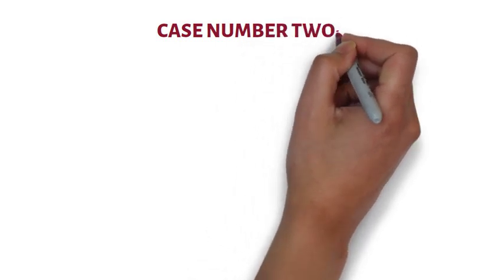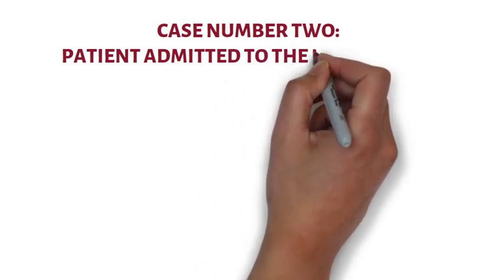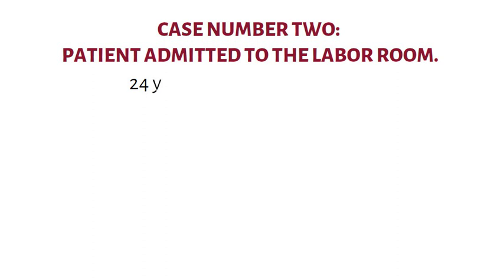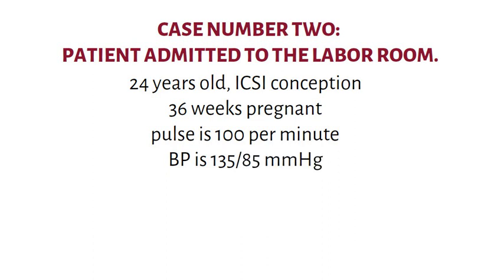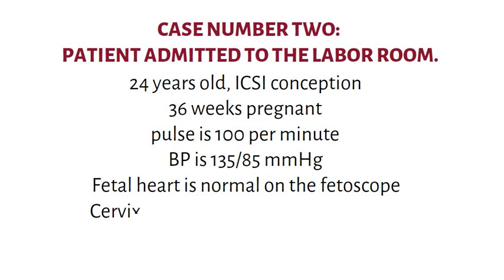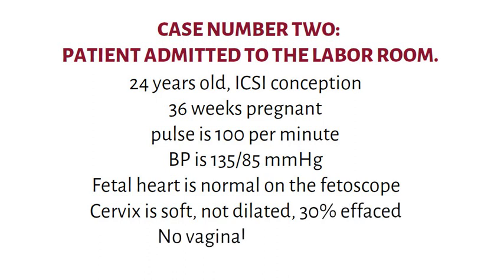Moving on to Case 2 — a patient admitted to the labor room. A woman has come to the labor room in her first pregnancy and you are the on-call doctor. You have taken the history and performed an examination. The patient is registered as a private patient for a consultant. She conceived through intracytoplasmic sperm injection (ICSI) and is 24 years old. She is currently 36 weeks pregnant and complains of pain in the lower abdomen for the last six hours. The pain is regular and coming every 10 minutes. Her pulse is 100 per minute and regular, and blood pressure is 135/85.